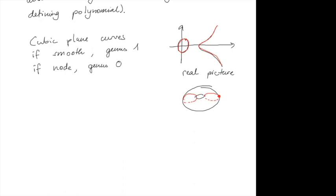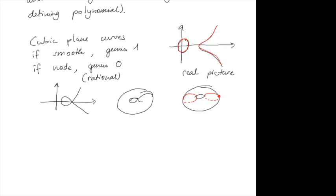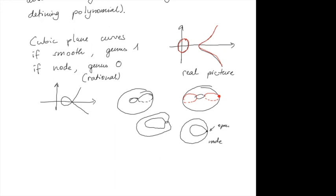If the cubic has a node, it has genus zero — we also say it is rational. The real sketch of a cubic with a node looks like a figure with a self-intersection. On the level of Riemann surfaces, the node corresponds to pinching a circle until it vanishes, leaving two parts that only touch at a point, homeomorphic to a sphere, which has genus zero.